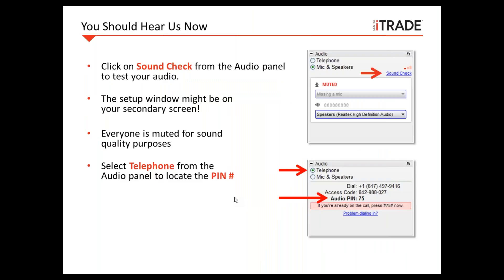You may have noticed that we are using a new webinar platform called GoToWebinar. If you are experiencing audio difficulties, you can click on that sound check link in your audio panel. The setup window may show up on your secondary screen. Everyone is muted for sound quality purposes, and you have the option of joining us by telephone. If you do, don't forget to enter that access code as well as the audio pin from the audio panel.